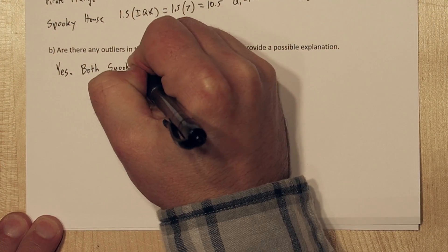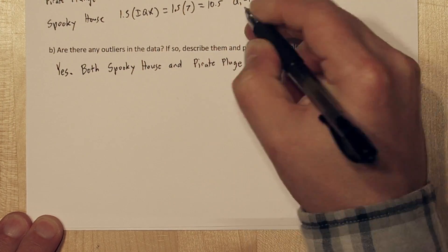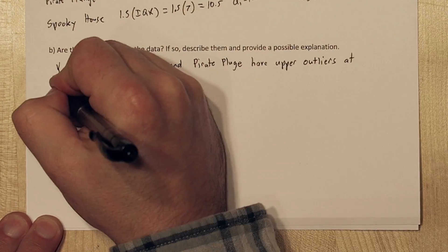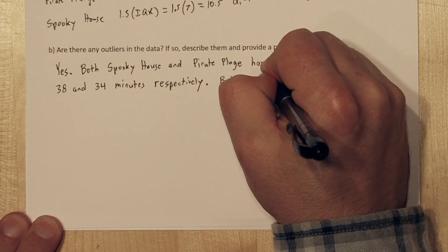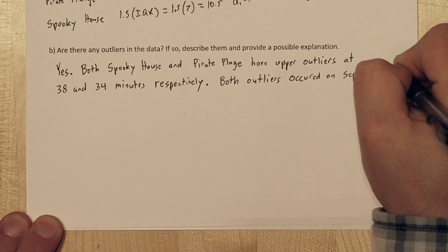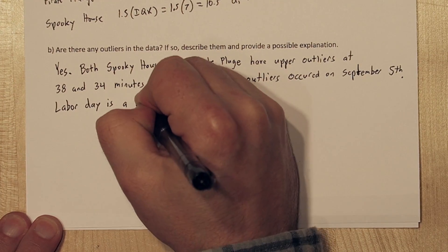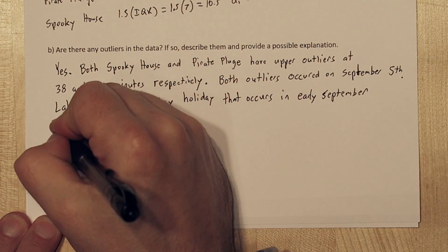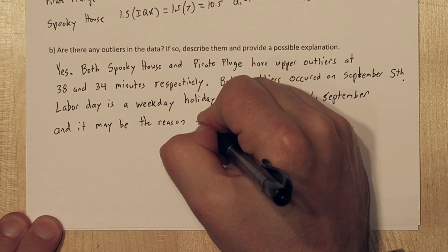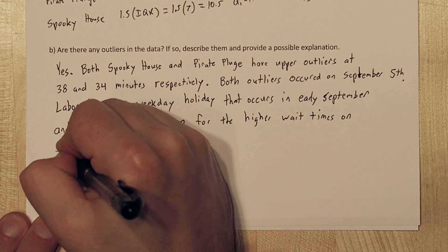Now in Part A we found outliers, so we're going to say yes. Both Spooky House and Pirate Plunge have upper outliers at 38 and 34 minutes respectively. Both outliers occurred on September 5th. So, I'm thinking Labor Day is a weekday holiday that occurs in early September. So, it may account for the reason there was higher wait times on September 5th.